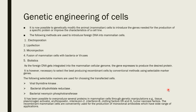Microinjection is the direct injection of DNA into the nucleus with the help of a fine needle and pipette. Fusion of mammalian cells with bacteria or viruses can also be used to inject a particular type of DNA into the cell. The biolistic or gene gun / particle bombardment method can be used, in which DNA is coated onto gold or silver particles that are accelerated with helium gas at high speed and shot directly into the cell.